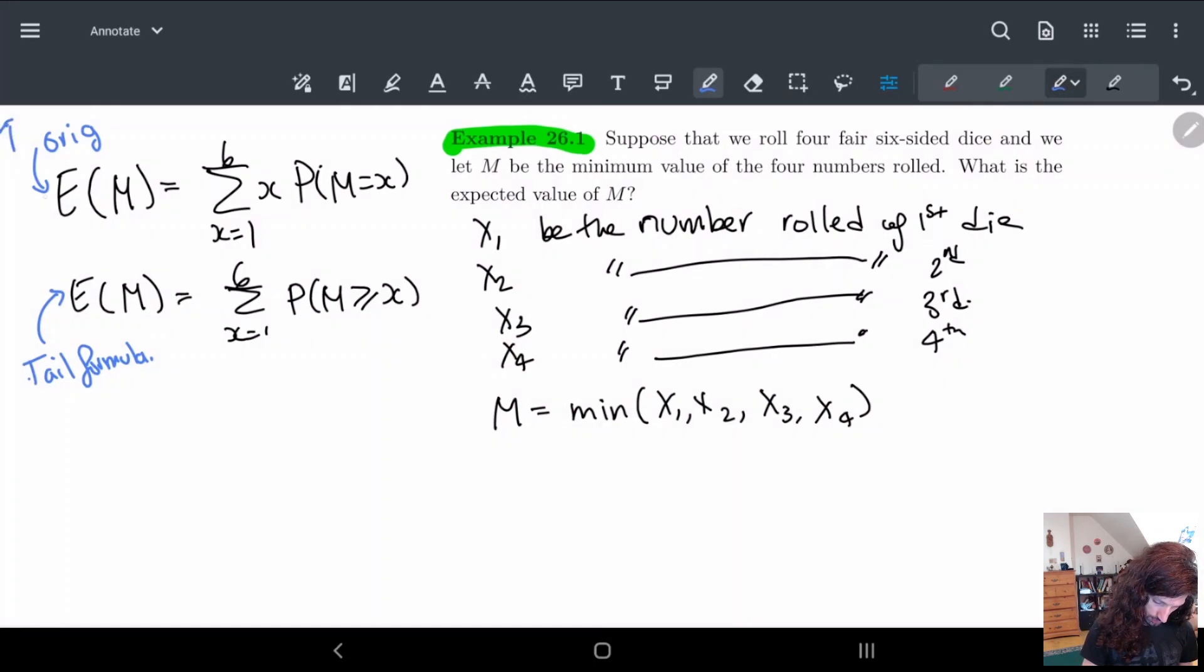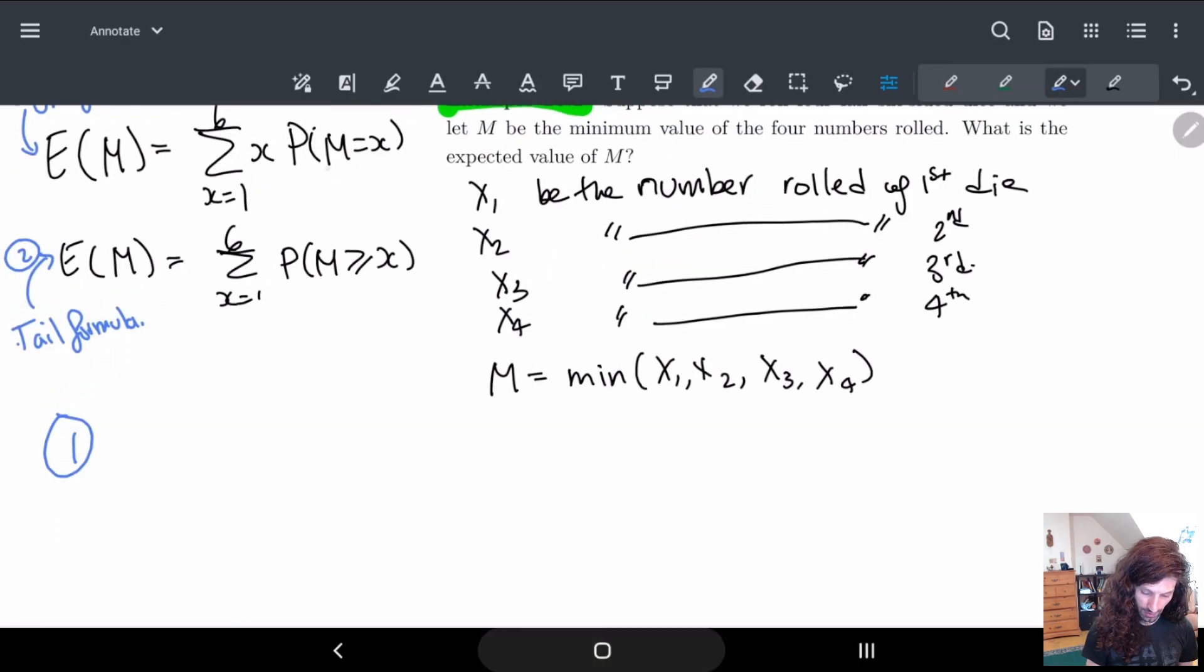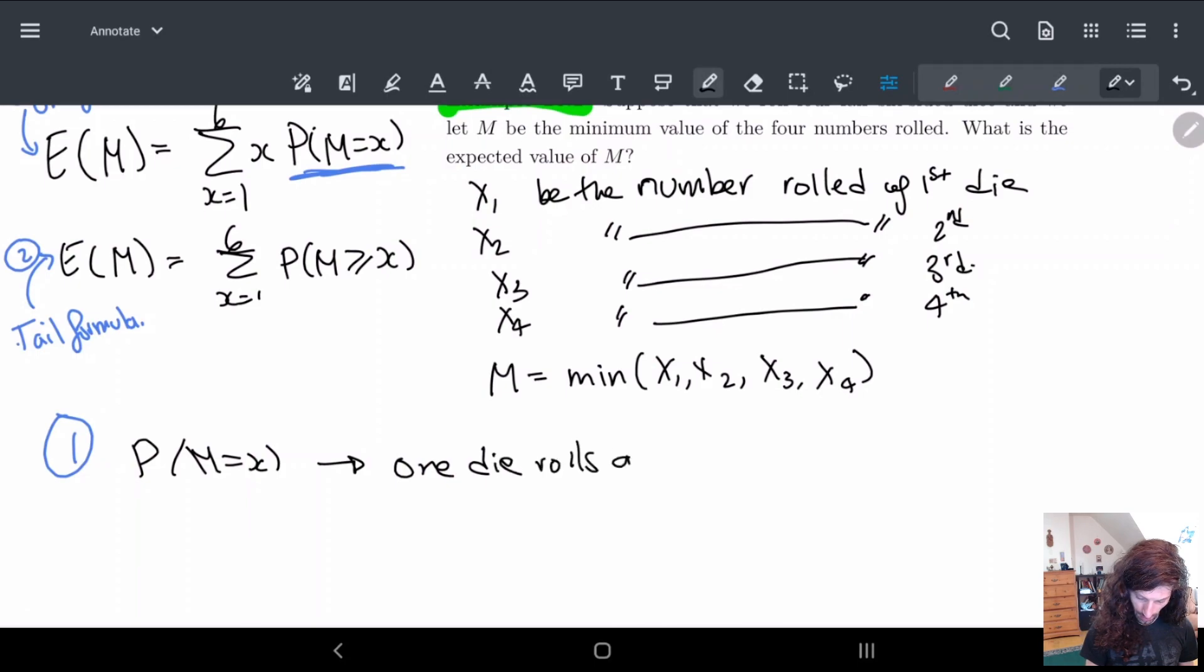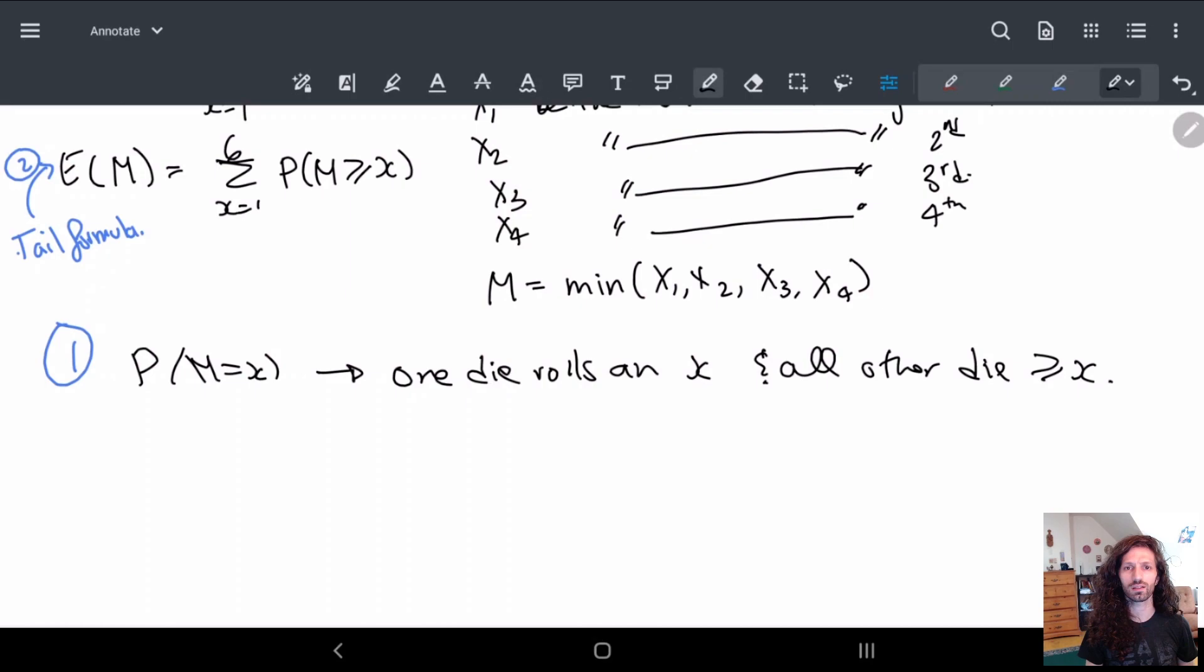So for the first one, this is 1, and this is 2. So let's start off with 1. So to do 1, I really need to first calculate what these kind of numbers are. So we're asking really what's the probability that one of the dice rolled an x, and then everything else was greater than or equal to x. So what do we do? First we need to choose a die. So probability of M equals x, this is one die rolls an x, and all other dice are greater than or equal to x. This is kind of one way to look at this. And we've seen examples of this before.